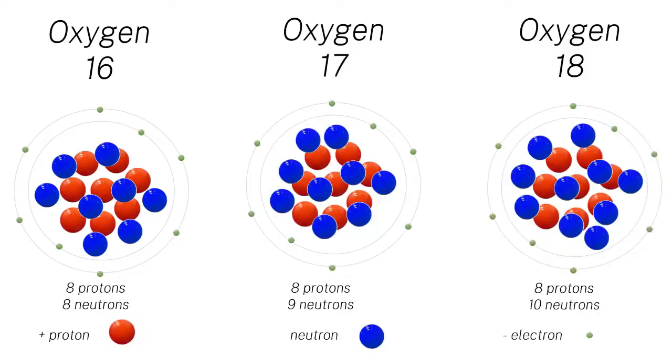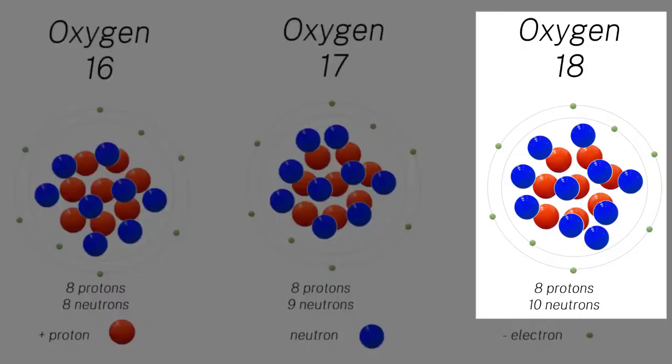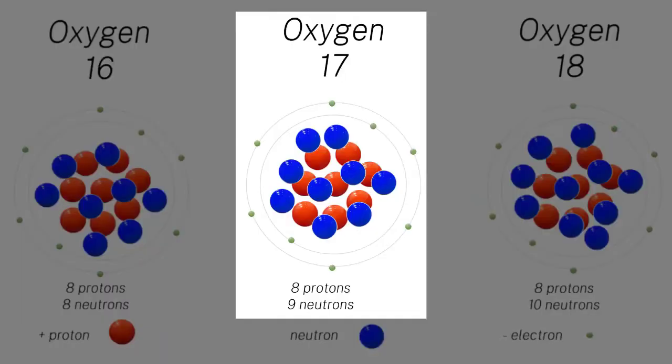About 0.2% is found as oxygen-18, and an even smaller amount is found as oxygen-17. Oxygen isotopes in water are important because small changes in the amount of one oxygen isotope compared to another are driven by changes in temperature and humidity. So by measuring the amount of the different isotopes, we're able to reconstruct changes in Earth's climate system through time.